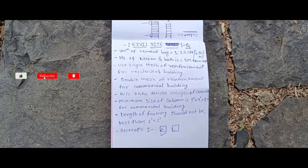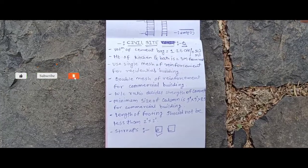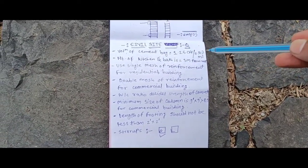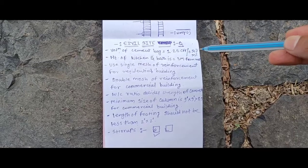Volume of cement bag is 1.25 cubic feet or 0.0347 meter cube.